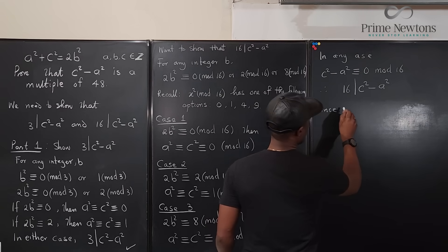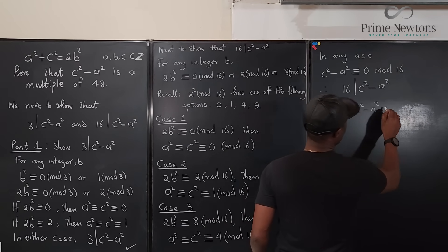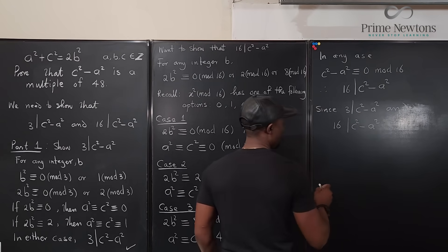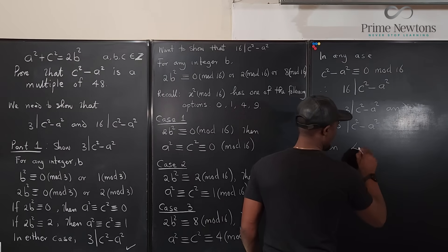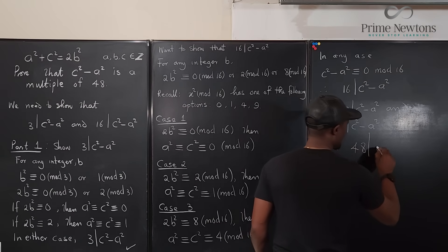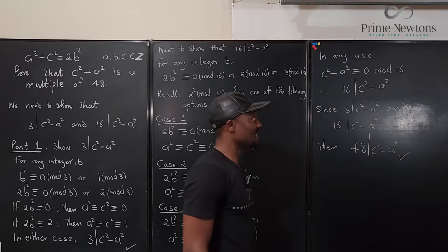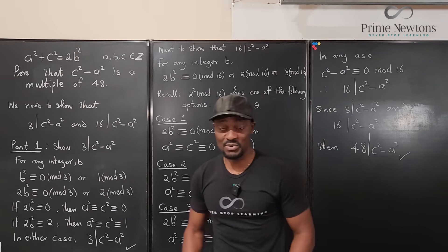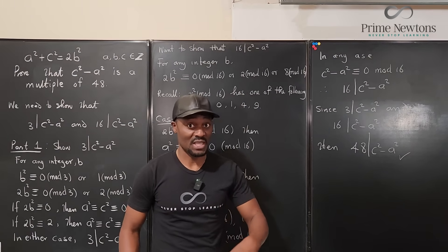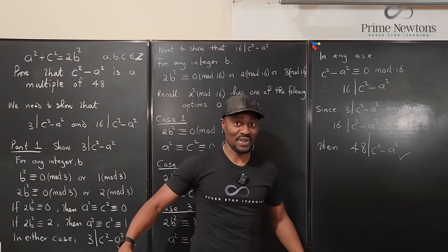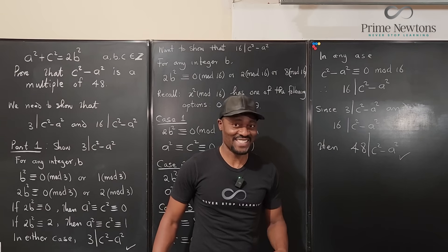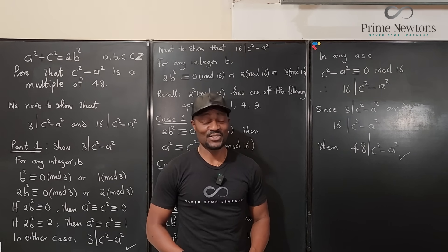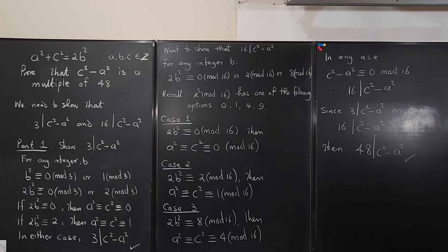Since 3 divides c² - a² and 16 divides c² - a², and since gcd(3, 16) = 1, it follows that 48 divides c² - a². That's the whole idea of this proof and how I saw it. This was sent to me by my professor from New York a while ago. I hope you never stop learning, because those who stop learning stop living. Bye!